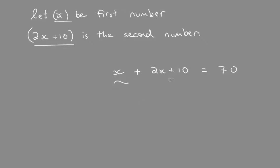Combine like terms. Remember to subtract the 10 when you move positive 10 across the equal sign. Divide both sides by 3. x equals 20.